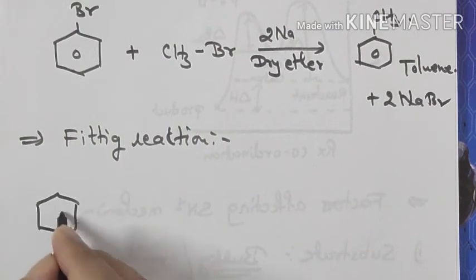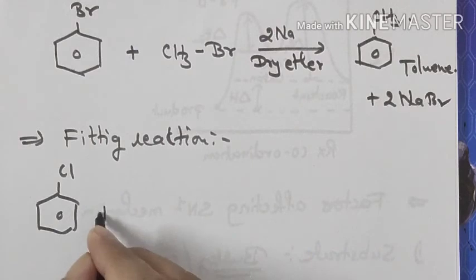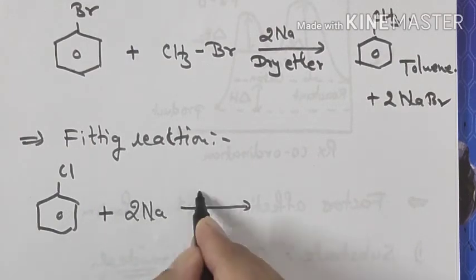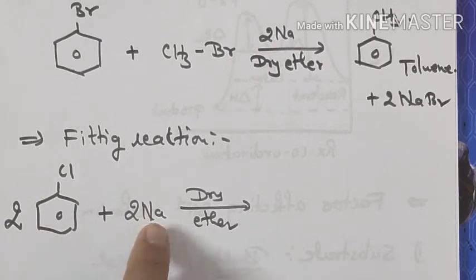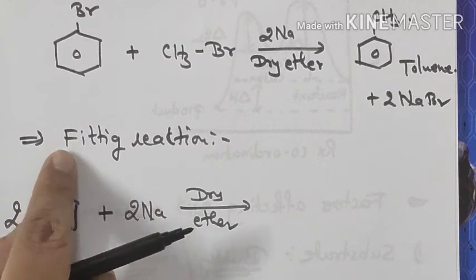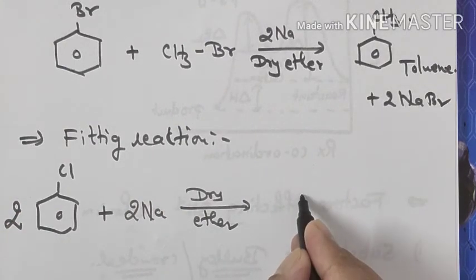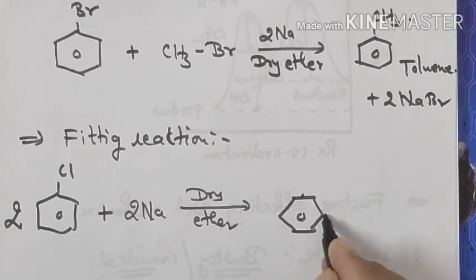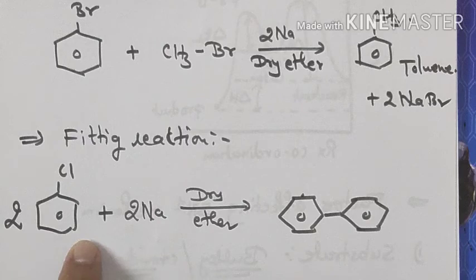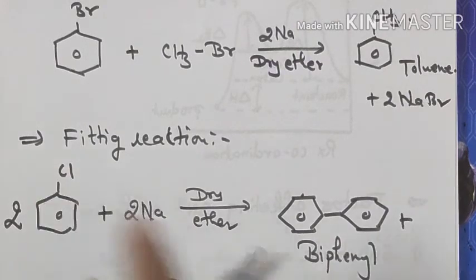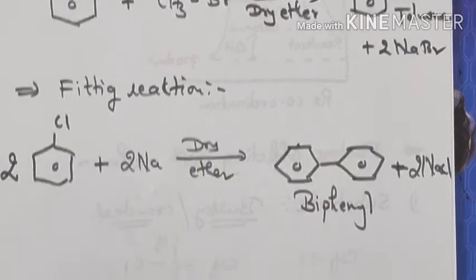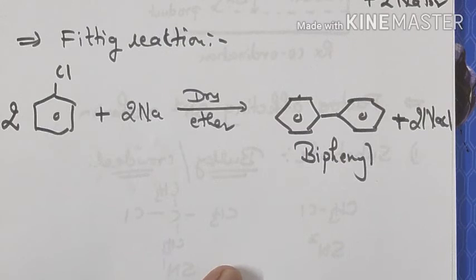For the Fittig reaction, we take two moles of chlorobenzene and treat with sodium metal in dry ether. One Na takes one Cl, another Na takes the other Cl, and the two benzene rings combine to form biphenyl, plus two moles of NaCl. This reaction — where two aryl halides couple — is called the Fittig reaction.